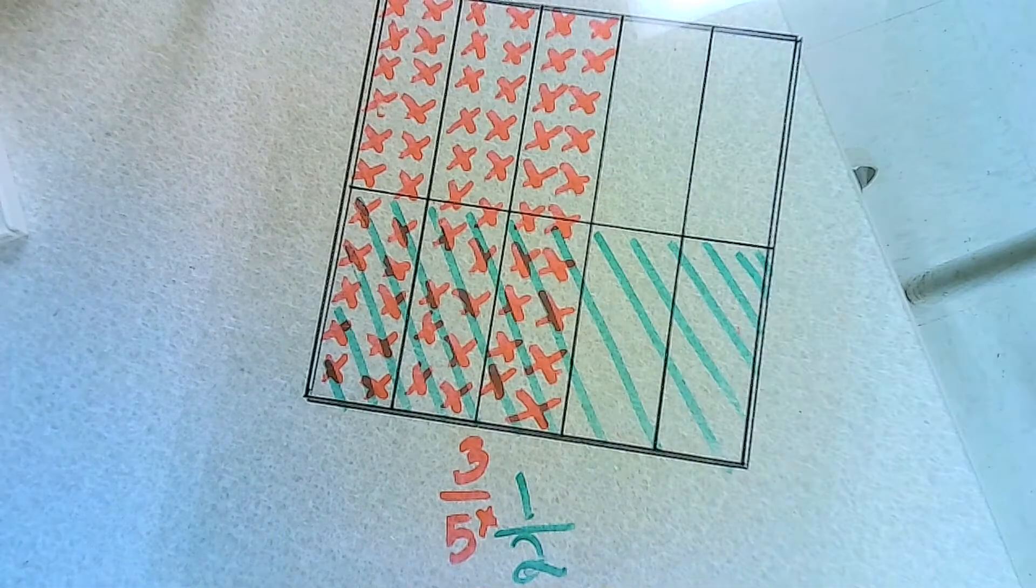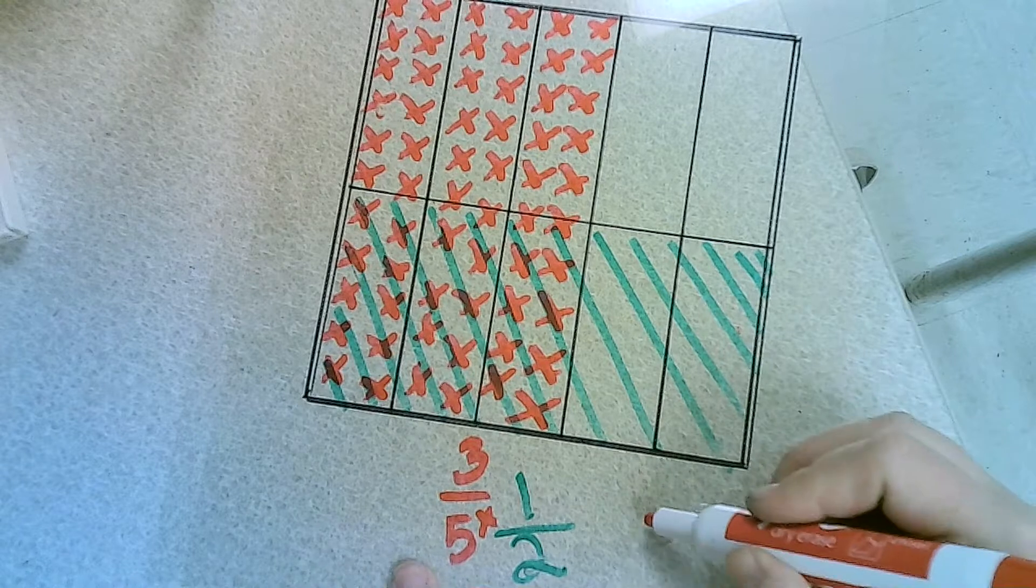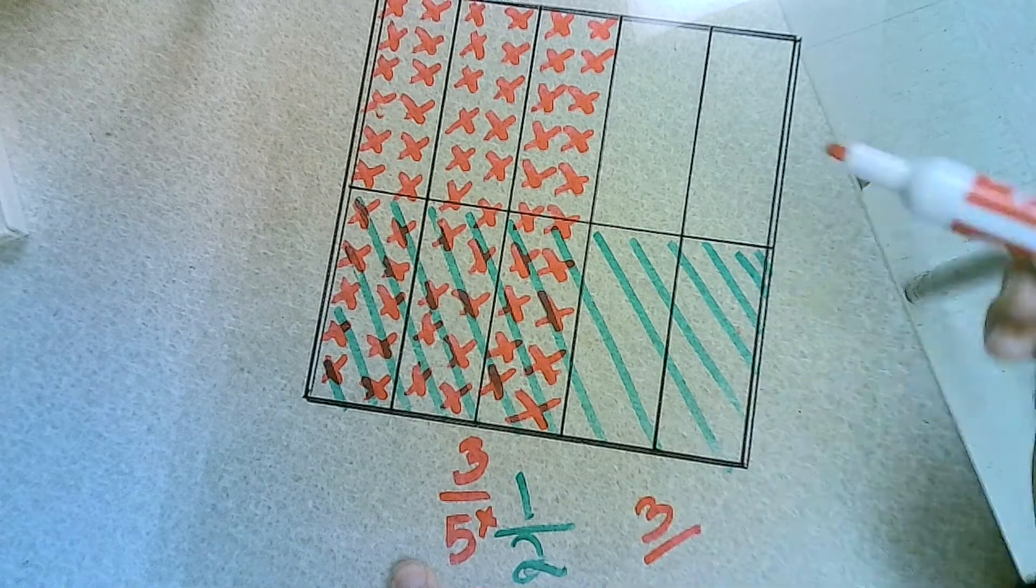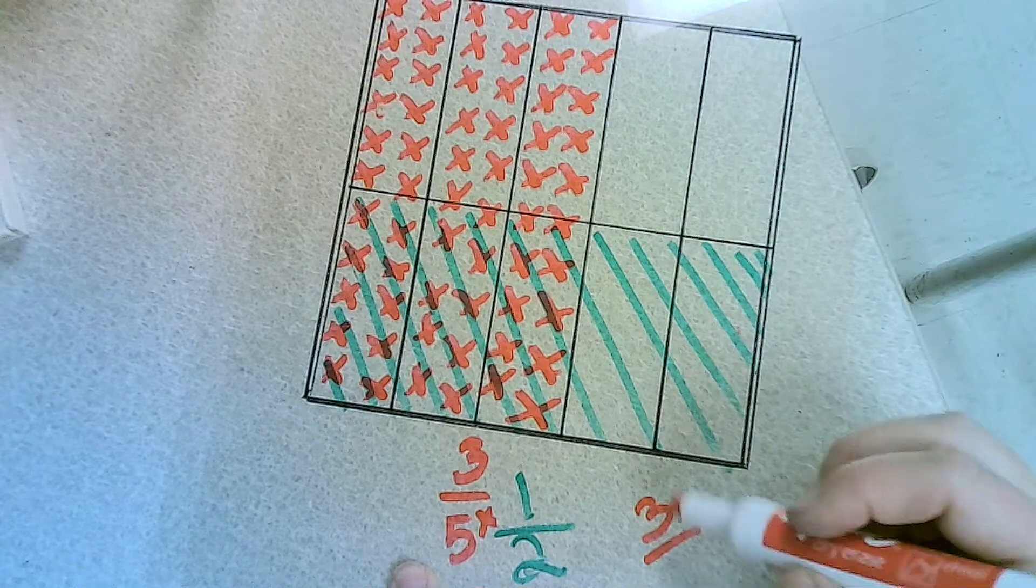1, 2, 3 have both red and green in them. So it is 3 out of 1, 2, 3, 4, 5, 6, 7, 8, 9, 10.